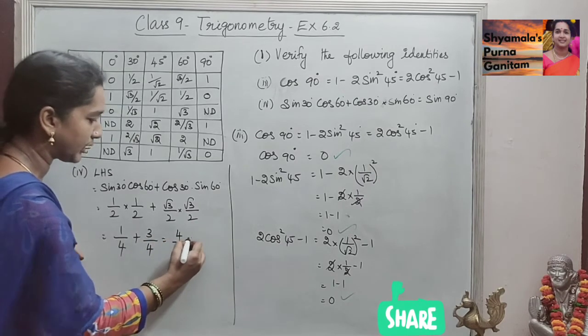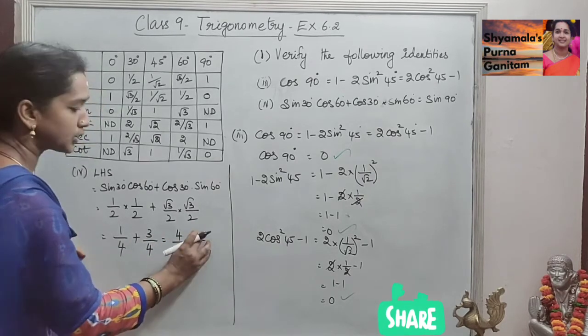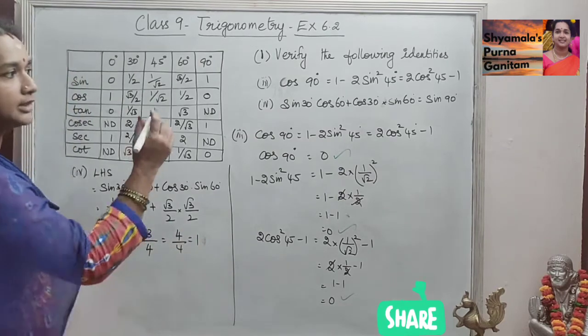So this will get it as 4 by 4, that is equal to 1. So this is the LHS value, 1 is the LHS value.